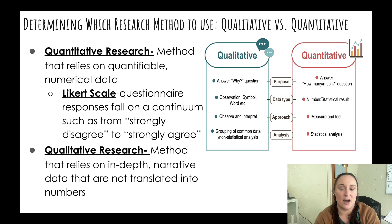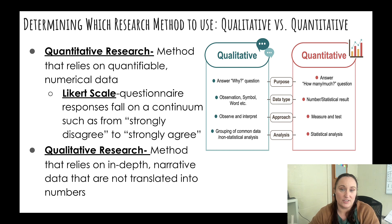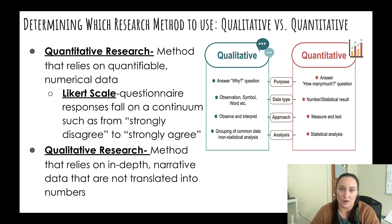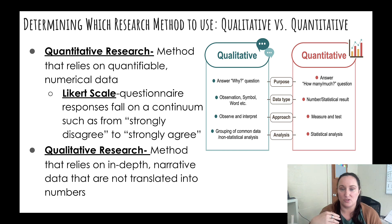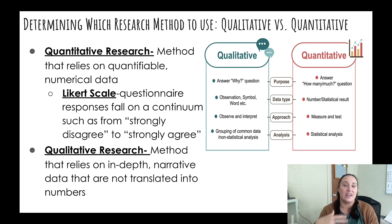There are two different types of research designs we're going to look at today. Quantitative research is where you are asking a question that requires data — it requires a numerical answer. You might use something like a Likert scale, which is a questionnaire scale that goes from strongly agree to strongly disagree, and you would collect data on what percentage of people strongly disagree, neutral, or strongly agree, and then analyze that data.